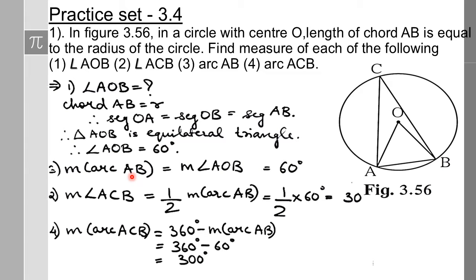Next, the measure of arc AB. By definition, the measure of an arc is the same as its corresponding central angle. So measure of arc AB equals measure of angle AOB, which is 60 degrees.